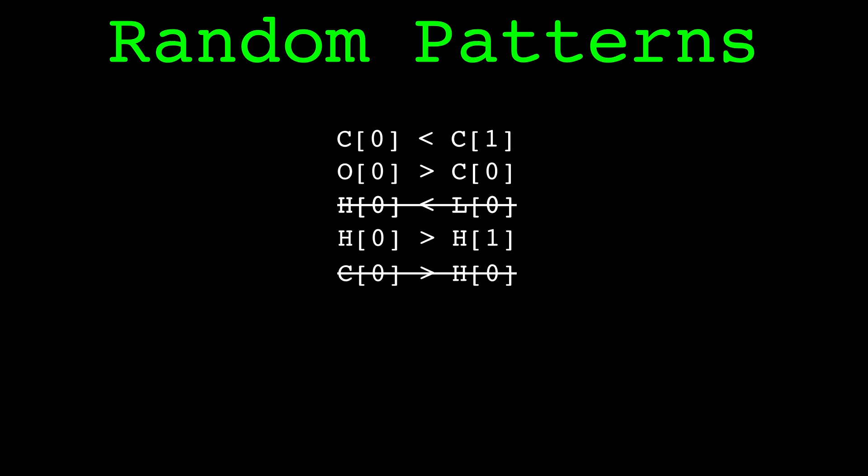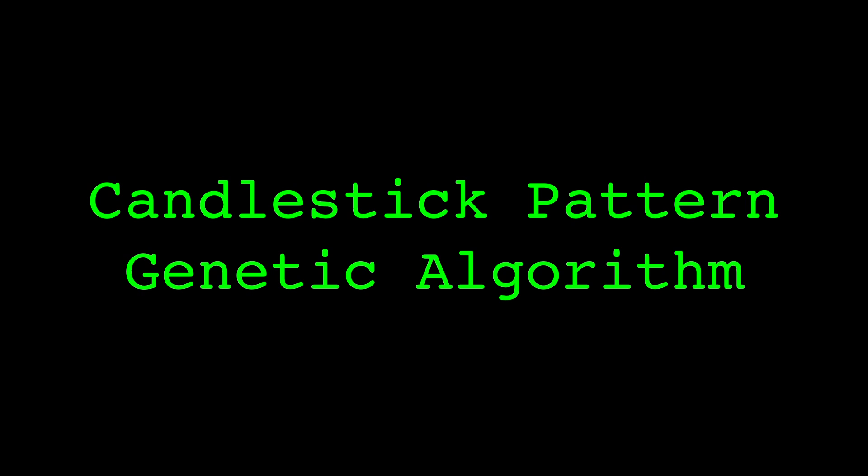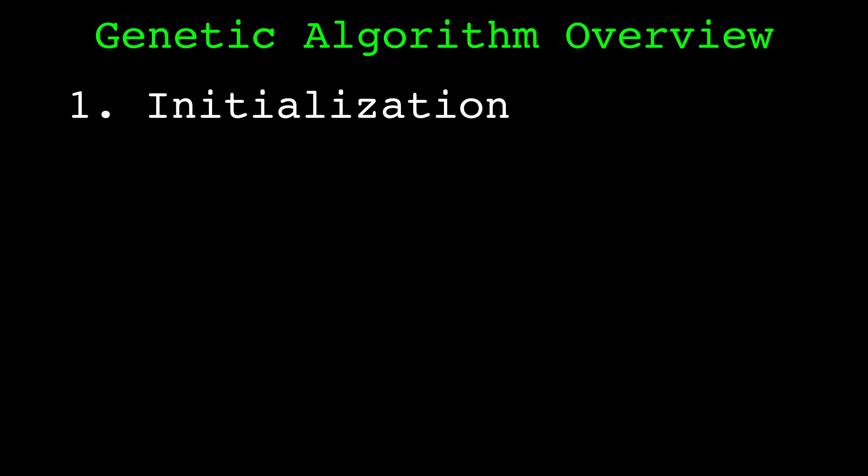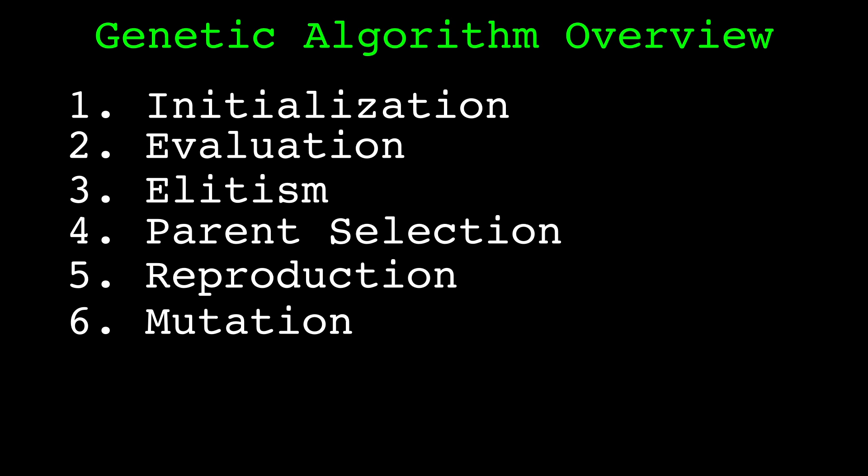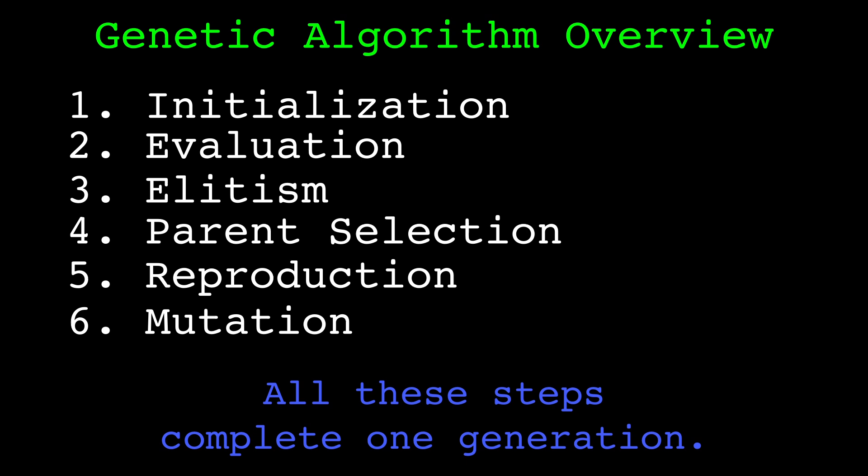With the pattern schema defined, let's look at the genetic algorithm. The genetic algorithm has six main steps: initialization, evaluation, elitism, parent selection, reproduction, and mutation. A pass through each of these steps is called a generation. After a generation is complete, the next generation is started at step 2, evaluation.